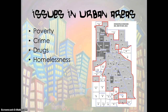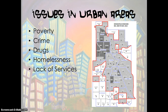Homelessness is also an issue. Several million people are homeless in the United States. Most are homeless because they cannot afford housing and have no regular income due to poverty, crime, and drugs in some cases. Homelessness may be sparked by family problems or job loss and is typically cyclical. Lack of services is also an issue — the concentration of low-income residents in inner-city neighborhoods has produced financial problems, as these people require public services but can pay very little in taxes to support them. Central cities face a growing gap between the cost of needed services and the availability of funds to pay for those services.